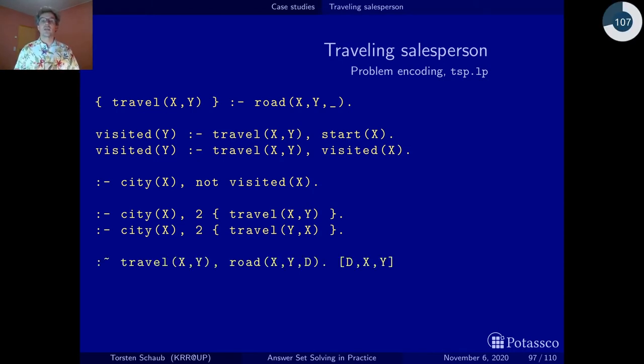Weak constraints are from the flavor a little bit like integrity constraints. Just that integrity constraints once they are satisfied eliminate a solution candidate while weak constraints impose a penalty. So in our case whenever we decide to travel from x to y by deriving the predicate travel x y we generate the penalty given by the distance between x and y.